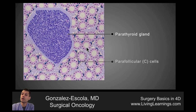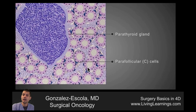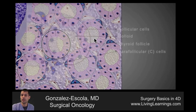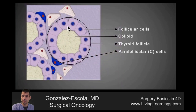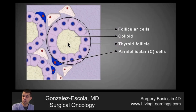The thyroid follicle is basically this arrangement of cells. There are follicular cells that are surrounding a central colloid or lumen, as we can see in this image. This entire complex is called the thyroid follicle, which is composed of multiple follicular cells surrounding the colloid or lumen, which is a proteinaceous fluid.